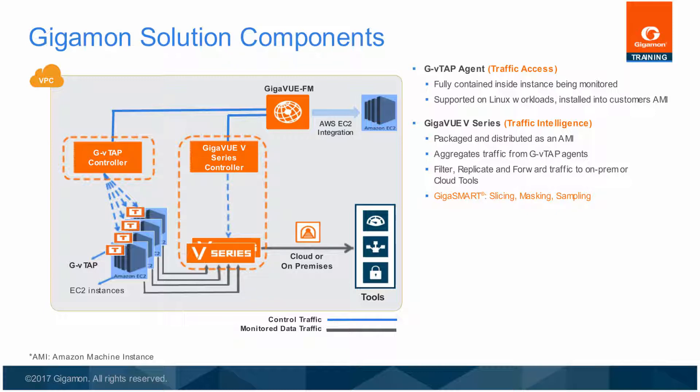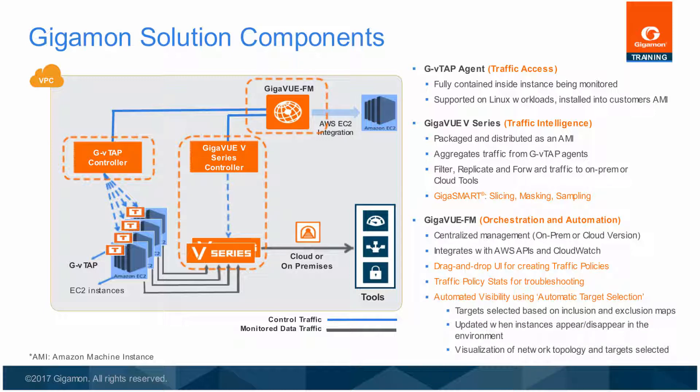The Gigaview V-Series controller centrally manages multiple Gigaview V-Series nodes and orchestrates the flow of traffic from the Gigaview V-Series nodes to the monitoring tools. Gigaview FM uses one or more Gigaview V-Series controllers to communicate with the V-Series nodes. The Gigaview FM is the centralized management application that can be deployed either on-premises or in the cloud, and defines traffic policies using a simple drag-and-drop UI. It also integrates with AWS APIs for EC2 network inventory and monitors CloudWatch events to identify EC2 instance spin-up.